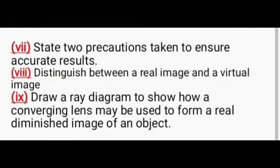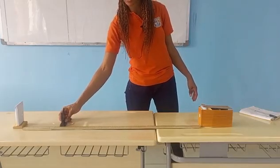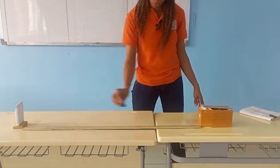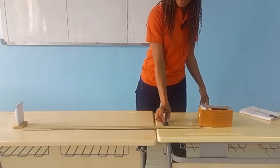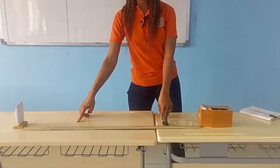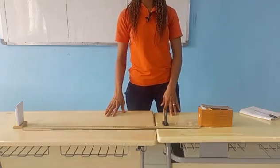You need to know the precautions. Then there are other questions: distinguish between a real image and a virtual image, draw a ray diagram to show how a converging lens may be used to form a real diminished image of an object. At each point, we move this object to get a very diminished sharp image when we move it towards the screen. Then we move also towards the object and get another image and then get the distance x1 and x2. We'll be calculating x2 minus x1 at different points where we'll be getting the sharp image.